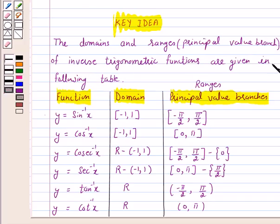From this table, we see the principal value branch, the range of the principal value branch of tan inverse is the open interval minus pi by 2 to pi by 2.